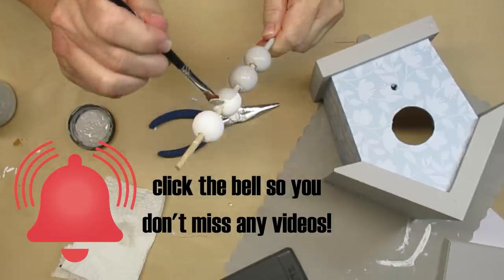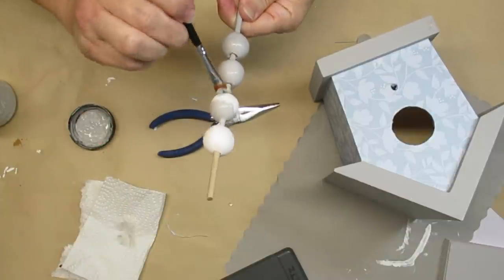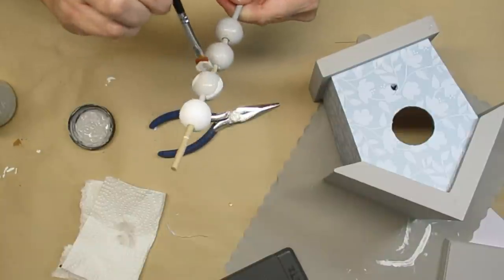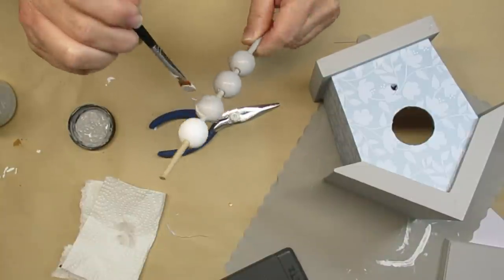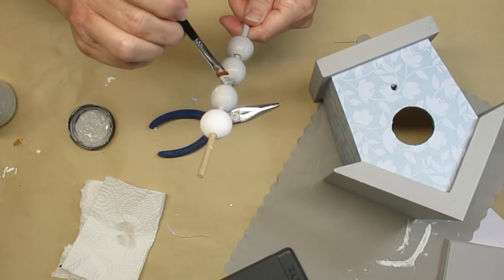I've got four of these giant wooden beads. They had already been painted white for a different project. I'm painting them with the same gray paint and once they're dry I'll glue them to the bottom of the birdhouse just to make it look like it's a bit of a riser.